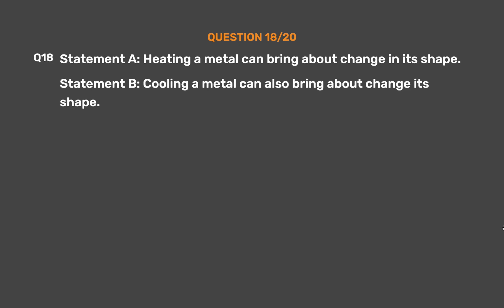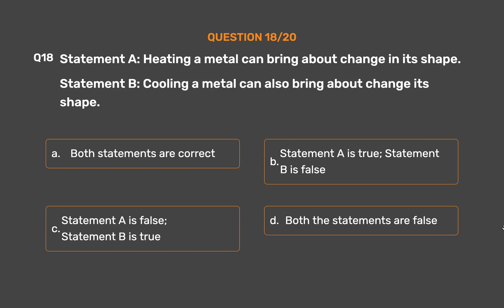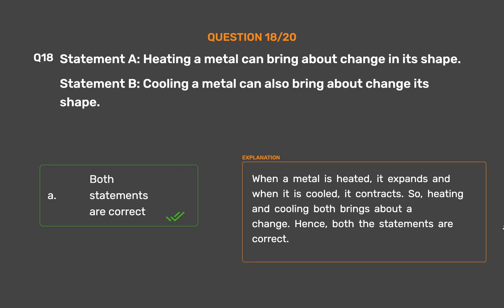Question number 18: Statement A — Heating a metal can bring about a change in its shape. Statement B — Cooling a metal can also bring about a change in its shape. Option A: Both statements are correct. Option B: Statement A is true, Statement B is false. Option C: Statement A is false, Statement B is true. Option D: Both statements are false. When a metal is heated, it expands and when it is cooled, it contracts. So heating and cooling both bring about a change. Hence, both statements are correct.